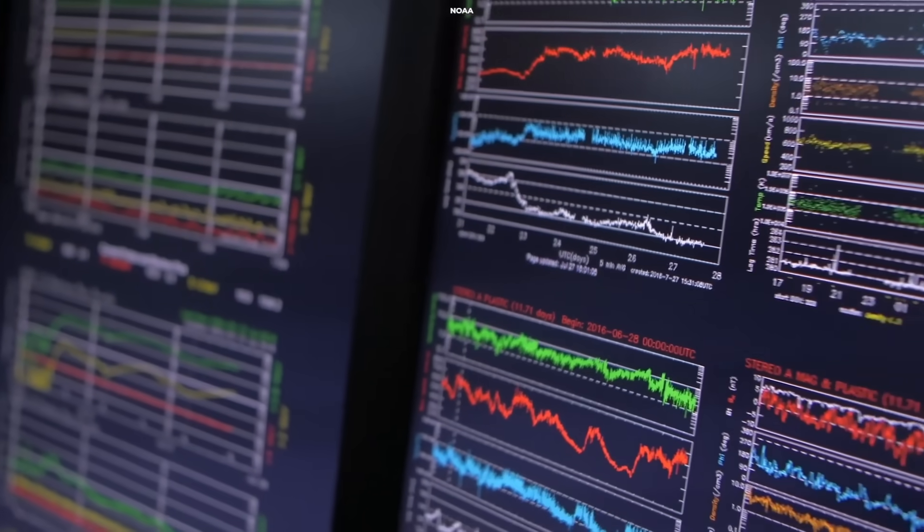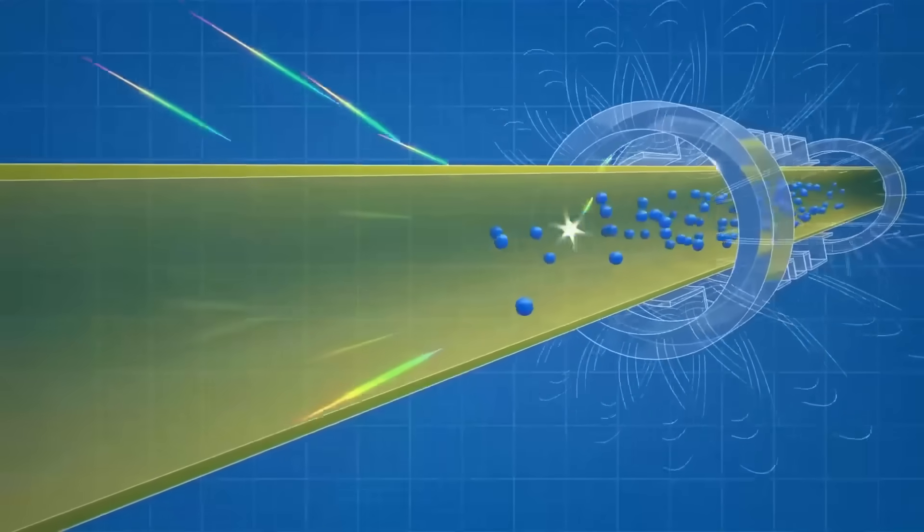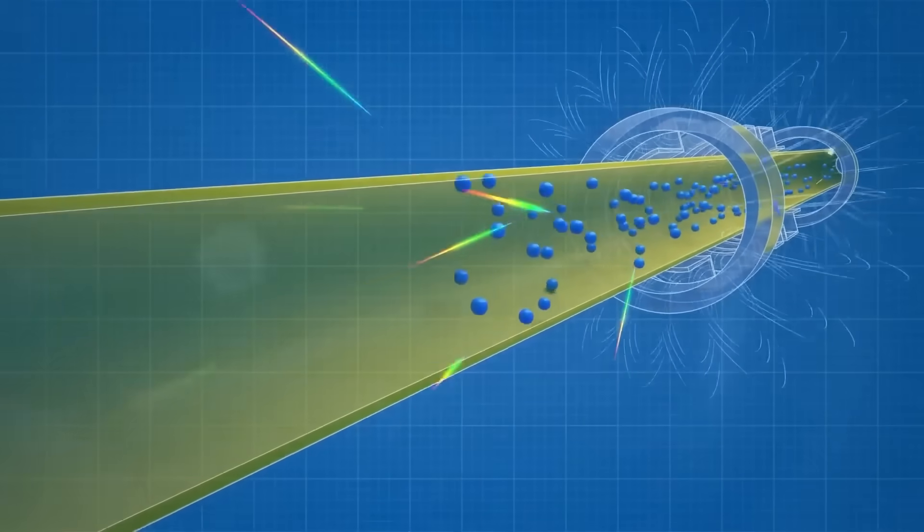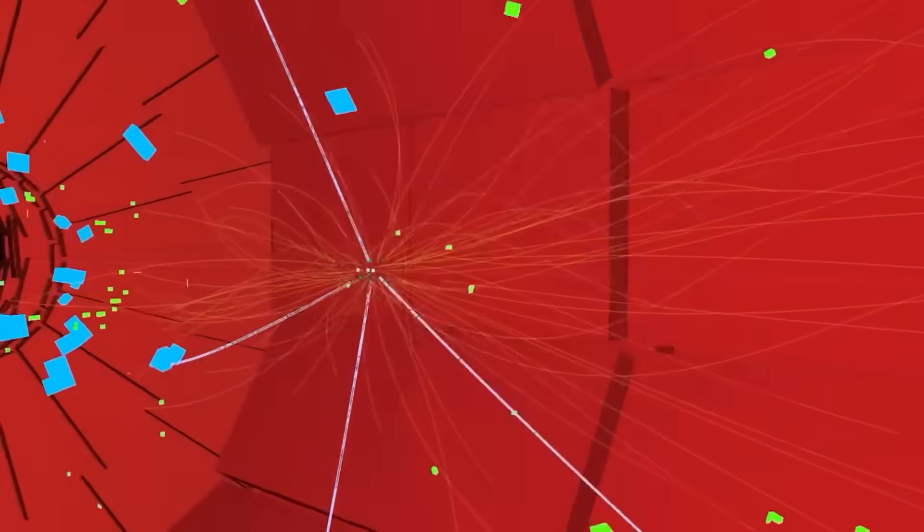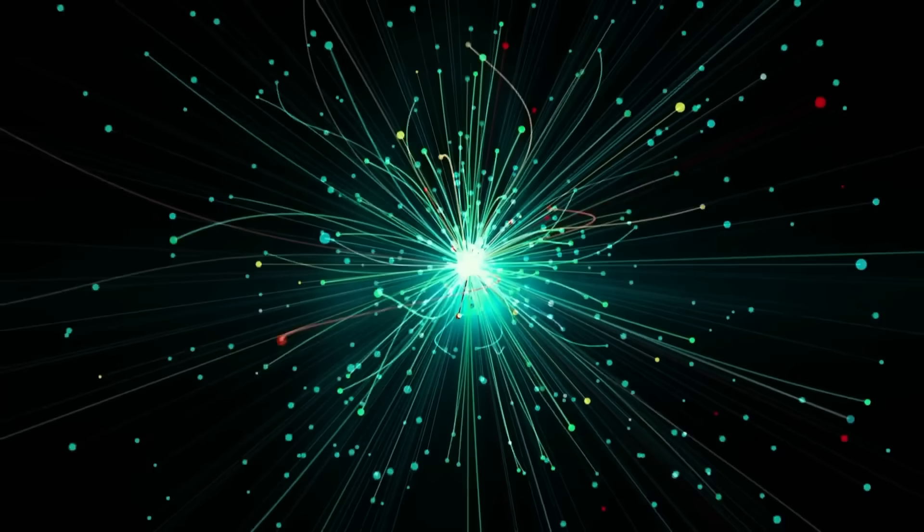These ions interact in ways that mirror particle physics problems. The second approach uses optical tweezers, focused laser beams that hold neutral atoms in a precise grid. Scientists can arrange these atoms to simulate exactly how particles would interact in extreme conditions.